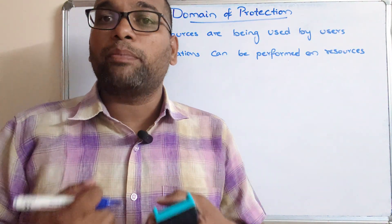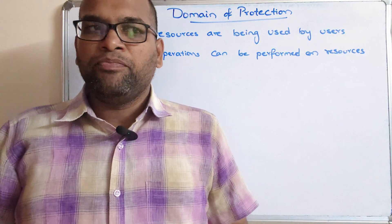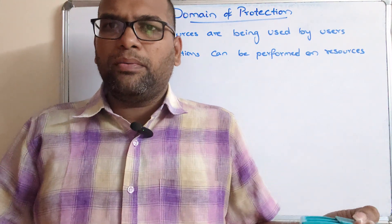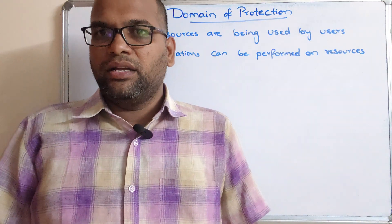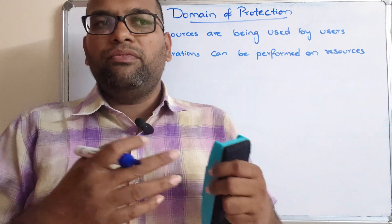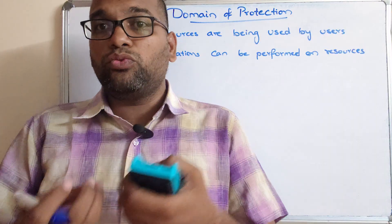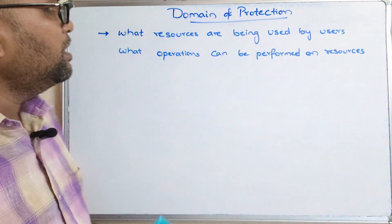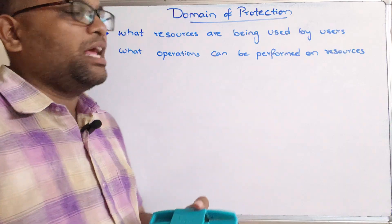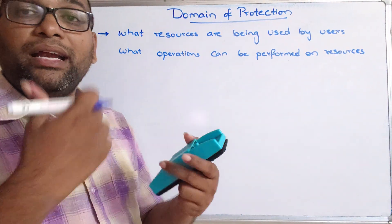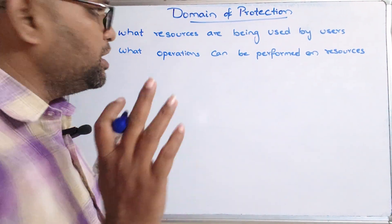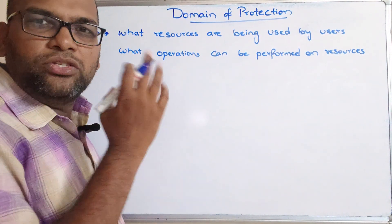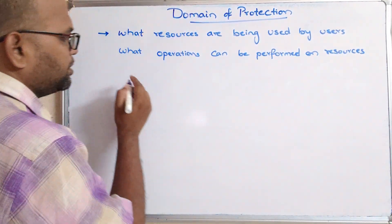Simply we can call these access rights or privileges. For example, take one company with many employees of different designations — every employee has their own privileges to use the resources. Similarly here, what resources can be used by users and what operations can be performed on them are defined.